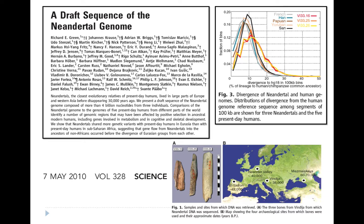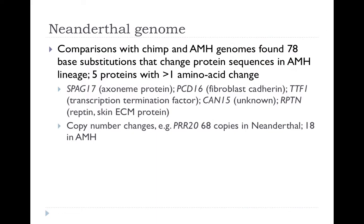Fast-forwarding to 2010, they finally published a draft sequence of the Neanderthal genome — a low-coverage but genuine draft. This is an amazing step forward: not long ago we got the human genome sequence for the first time, and the fact that we can now recover a Neanderthal genome from tens of thousands of years ago is extraordinary. They found a number of base substitutions that changed protein sequences specifically in our lineage, beginning to shed light on what actually makes anatomically modern humans different from Neanderthals.